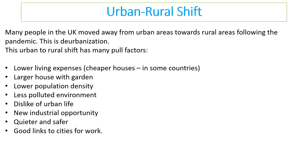The houses you get in rural areas are often bigger with larger gardens and there's a lower population density and probably less pollution. People might just dislike urban life, they might seek new industrial opportunities which often open in the countryside, and it might be quieter and safer. They can live in the country but still access the city via good transport links for work.